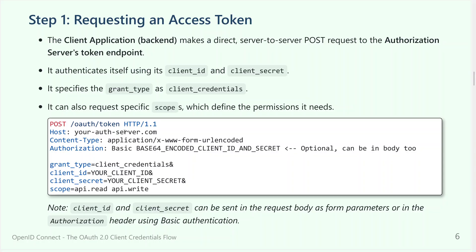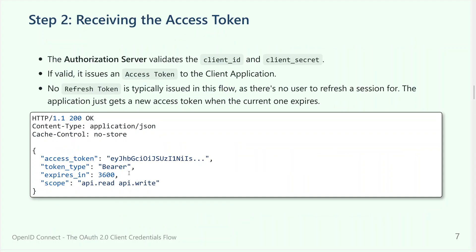The request is a POST to the server's token endpoint with a content-type header. You can include the client ID and client secret in the authorization header encoded, or provide them in the request body. Some people prefer the body because it's completely clear, even as JSON. Of course, we expect you to use HTTPS so there is no middleman seeing what's happening in the communication. If you want a safer approach, you can use the authorization header and remove the client ID and client secret from the body. It's a question of taste.